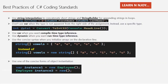Best practices of C# coding standards. Number one: use string interpolation to concatenate short strings, and use StringBuilder for appending strings in a loop. For string interpolation, for example: 'string fullName = $"{student.FirstName} {student.LastName}";'. When you have looping and want to append a sequence, use StringBuilder.